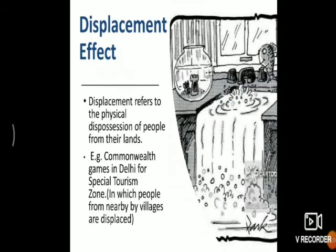Displacement effect refers to the physical displacement of people from their lands. It generally refers to the movement of people from one place to another due to some reason — it might be for educational purposes, some problem, or issues with the government. An example is the Commonwealth Games in Delhi, which forced people from village areas to relocate.